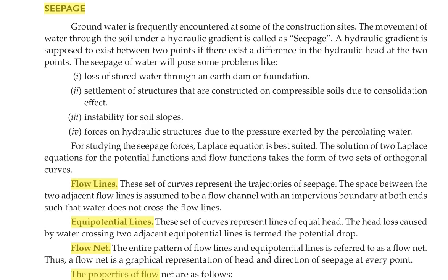Next we are going to see the flow lines. Flow lines are nothing but the set of curves that represent the trajectories of the seepage. The space between two adjacent flow lines is assumed to be a flow channel with an impervious boundary at both ends such that the water does not cross the flow lines. Equipotential lines are the set of curves that represent the lines of equal head. The head loss caused by water crossing two adjacent equipotential lines is termed as the potential head.